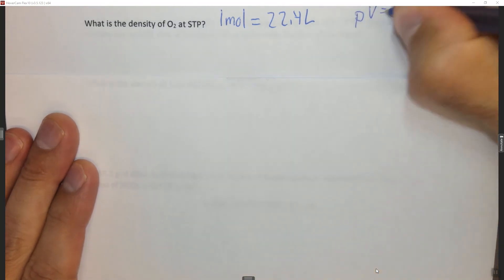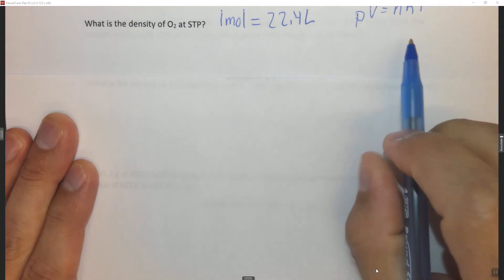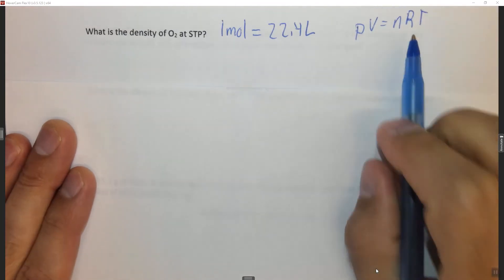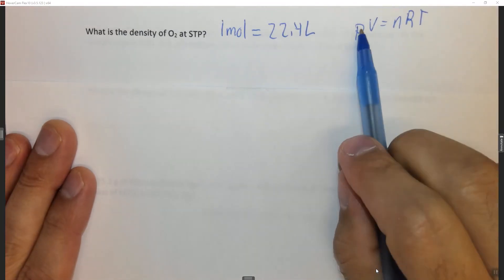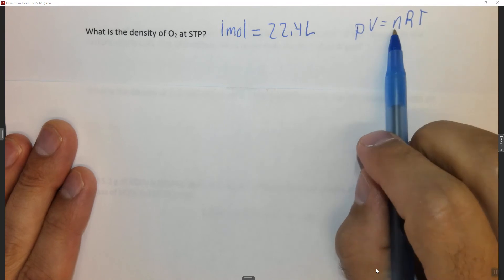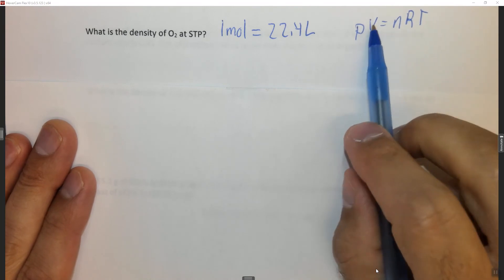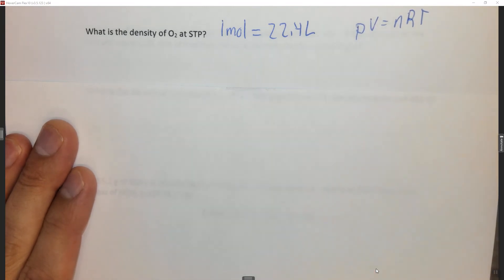You could actually solve this using PV equals nRT. We know the standard temperature is 273 K. We know that the standard pressure is 1 atmosphere. If we plug in 1 mole and solve for volume, we find that it's 22.4 liters.